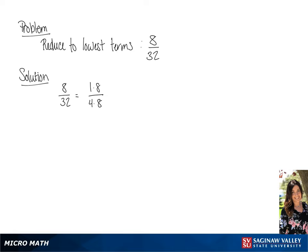which we can write as 4 times 8. This gives us 1 over 4 times 8 over 8, and since 8 over 8 is 1, we get the answer of 1/4.